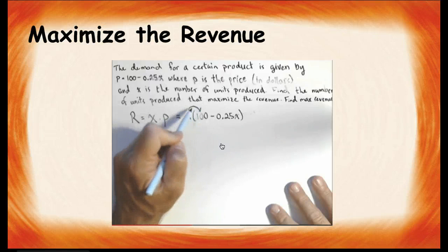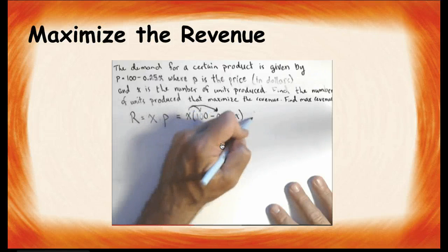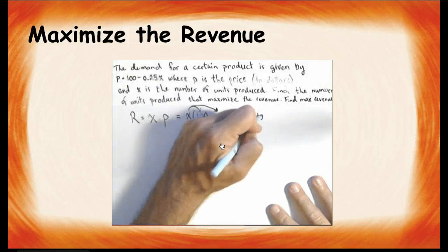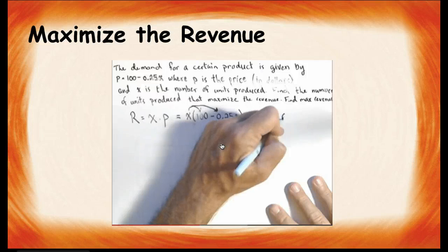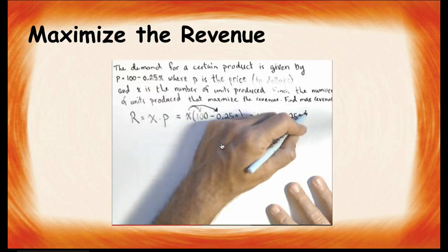Distribute the x, and you're going to see that we actually have a quadratic here, which equals 100x minus 0.25x squared.